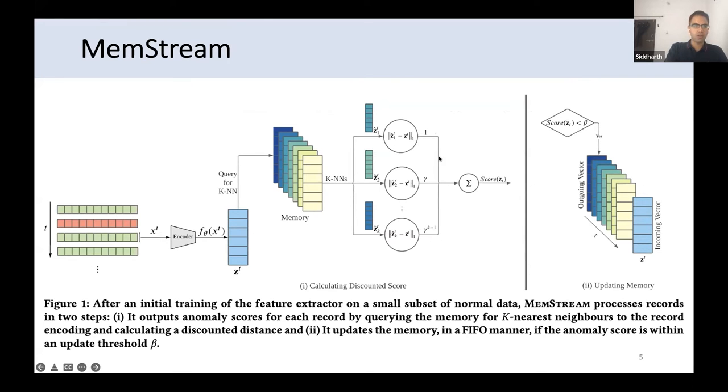This is how the model looks. It's divided into two parts. There is streaming data which is coming in over time and you have an encoder here. After initial training of the feature extractor, we train it on a very small subset of your normal non-anomalous, non-malicious data. After we've trained it on a very small subset, it can be 1%, 0.1%, depends on how much data you have. Then MemStream processes each record in two steps. It outputs an anomaly score for each record by querying the memory.